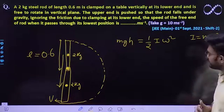Now putting in the values: G = 10 m/s² and L = 0.6 m, so V = √(6 × 10 × 0.6) = √36 = 6 m/s. This is the speed of the lowest most portion of the rod when it reaches its lowest position. I hope this question is clear to everyone. Thank you.